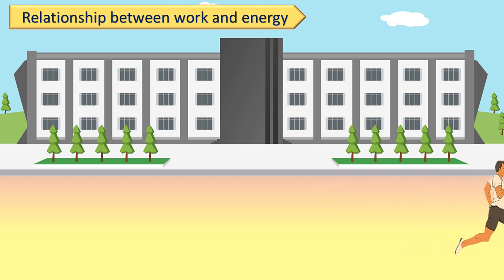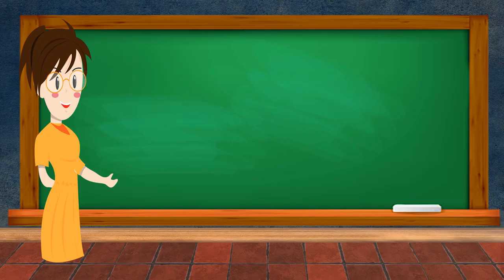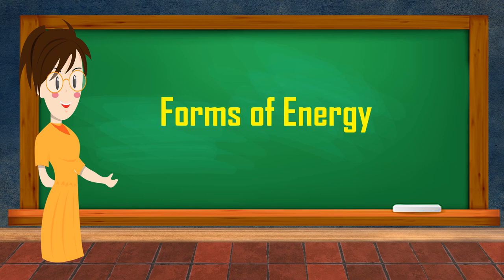From this, we can also define energy: the capacity to do work is called energy. But do we use only one form of energy for every work? No, for every work we use a different form of energy. So, let's see what are the different forms of energy.